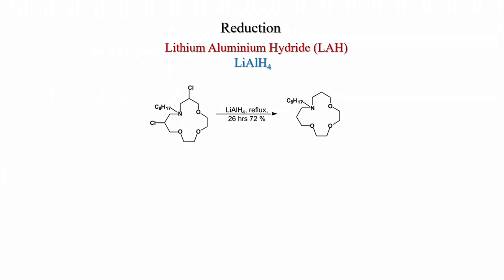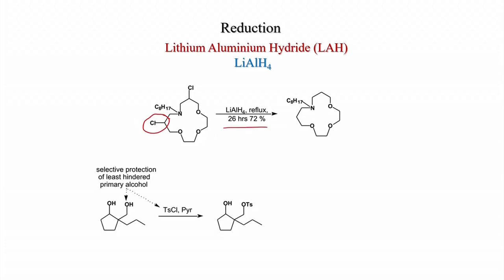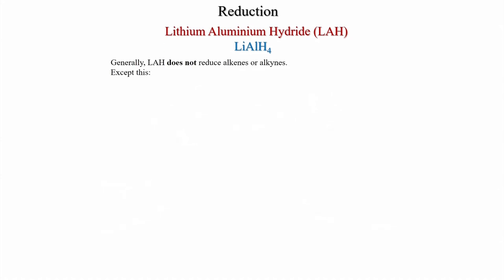In a cage compound, chlorine can be removed with LiAlH4 under reflux. Also, selective protection of a primary alcohol as a tosylate followed by LiAlH4 reduction removes the tosylate to generate the alkyl group — a useful synthetic manipulation.